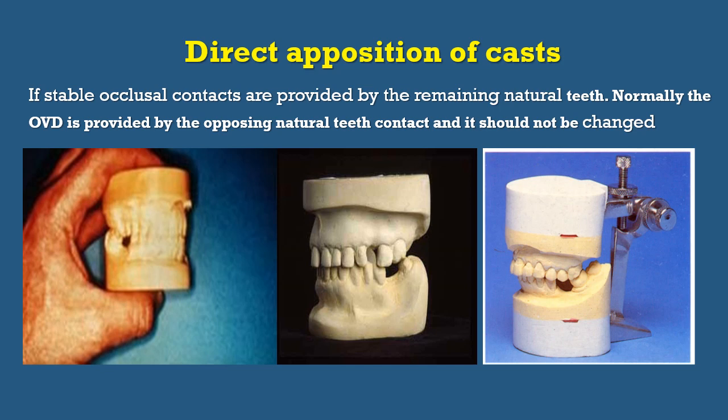The first method is direct opposition of the cast. It is used when you have stable occlusal contacts provided by the remaining natural teeth — in Kennedy Class III classification where few teeth are going to be replaced and you have enough occlusal stoppers from the right, left, and anteriorly. You can hold the casts by hand, stabilize both upper and lower casts, then mount on the articulator and proceed with construction of the prosthesis.